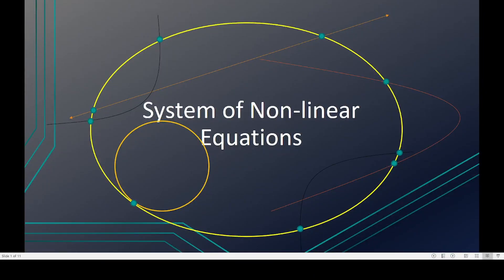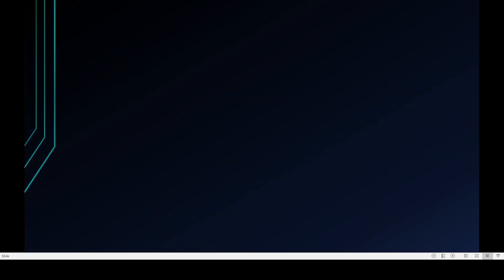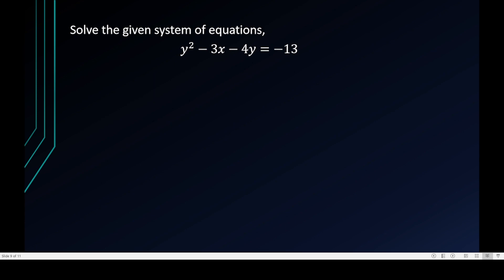Hello everyone, welcome to my channel. This is SirJabs again — this is Part 3 of video discussions regarding systems of non-linear equations. In this video I will be giving you another example. We have here: solve the given system of equations y² − 3x − 4y = −13 and 16x² + 9y² − 36y = 108.